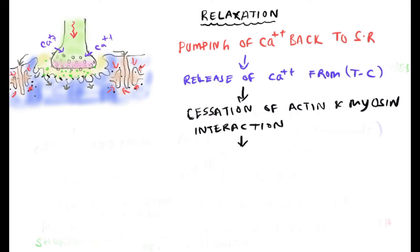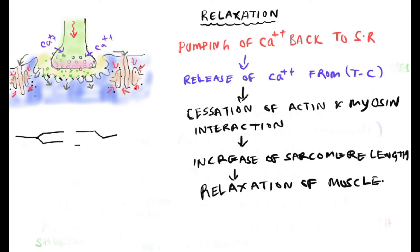calcium ions off of troponin C, causing cessation of actin-myosin interaction and increasing the sarcomere length. This is what happens during the relaxation phase. The left side illustration shows the thick myosin filaments surrounded by thin actin filaments in the sarcomere. During contraction, the myosin head pulls the actin filaments towards